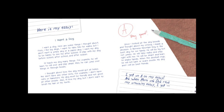Here is my essay. I want a dog. Here are some things I thought about. First, I like big dogs. I want to take him for walks, but I don't want a jumpy dog or a yappy dog. I want my dog to be happy to see me after school. I'll play with my dog before school, after school, and after supper. I'll teach my dog many things — he will learn to roll over and play dead, and he can jump over things or through hoops. We don't have any other pets. My dog must be friendly and not growl at other people. I don't want to brush his hair or his teeth. Since I looked at the dog breeds and thought about my criteria, I made a decision: a Bernese Mountain Dog is the best dog for our family.